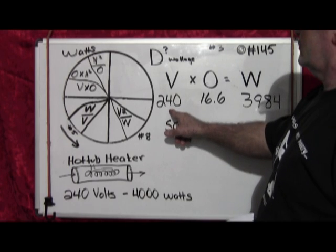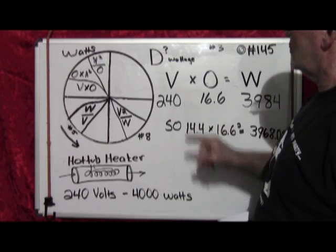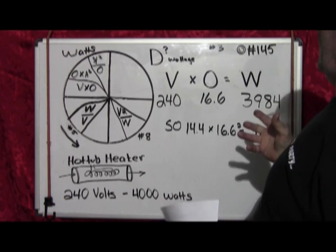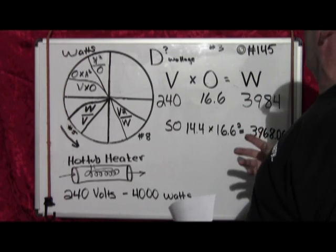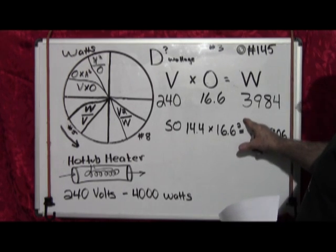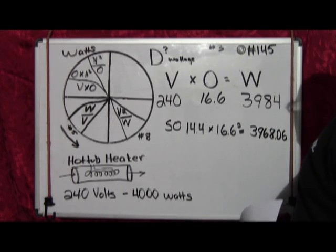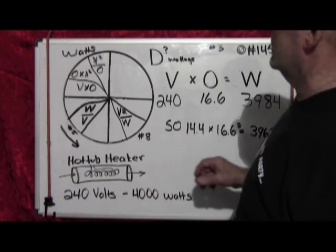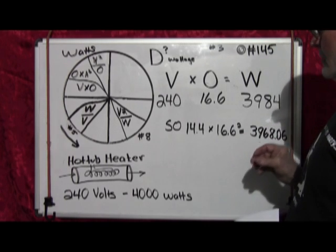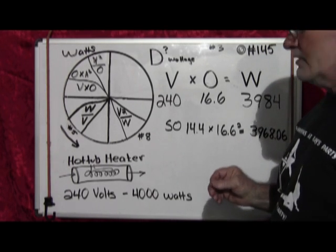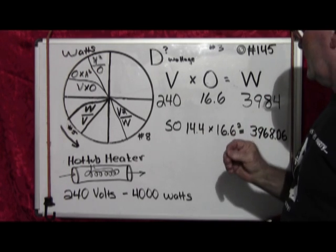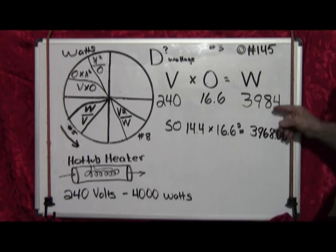First of all we took 240 and we squared it and that made a very big number, so there's an automatic variable put into that. Secondly we took this number and squared it. That made a big number. We did divisions and quite frankly my calculator does not have enough decimal points to be deadly accurate. Otherwise these would be closer.